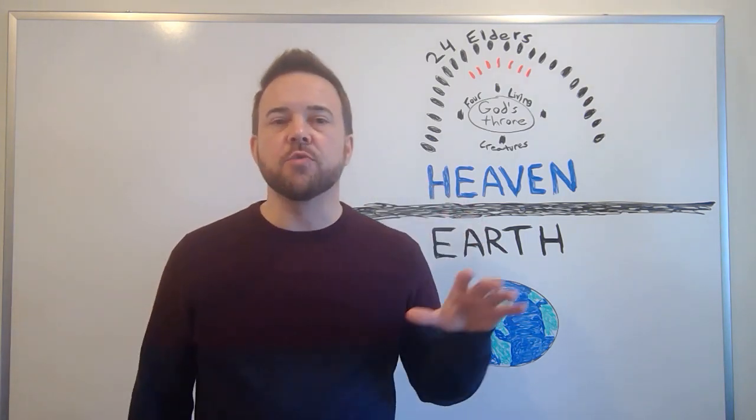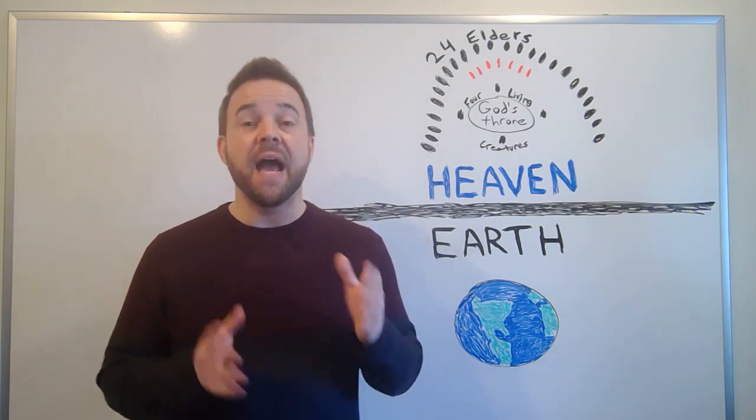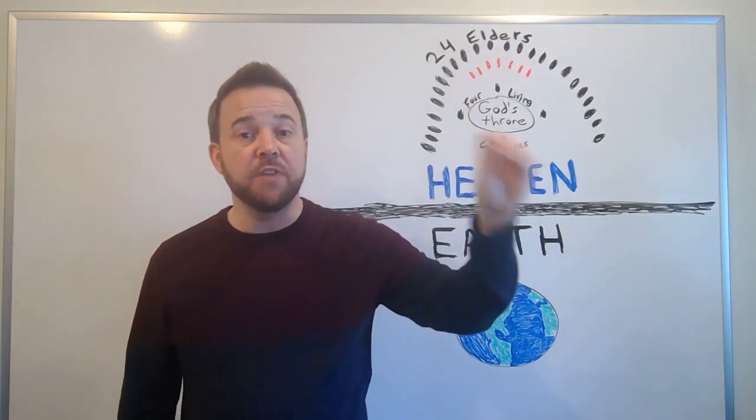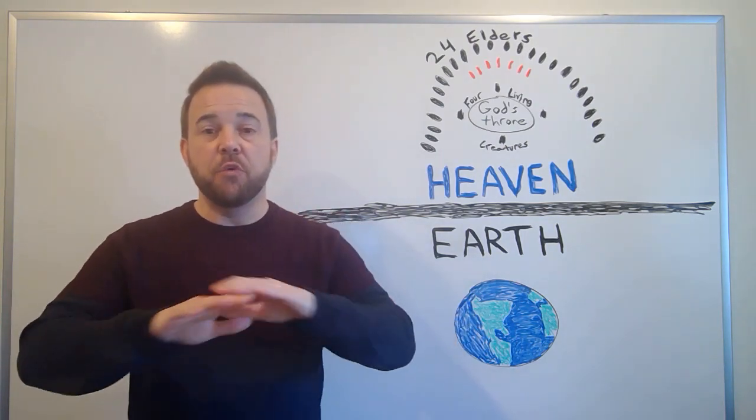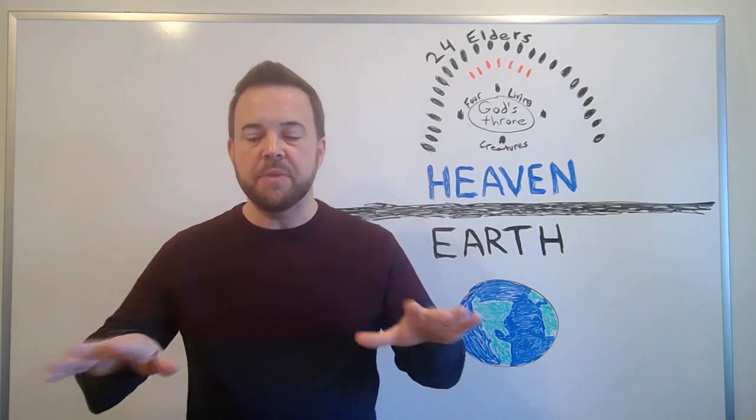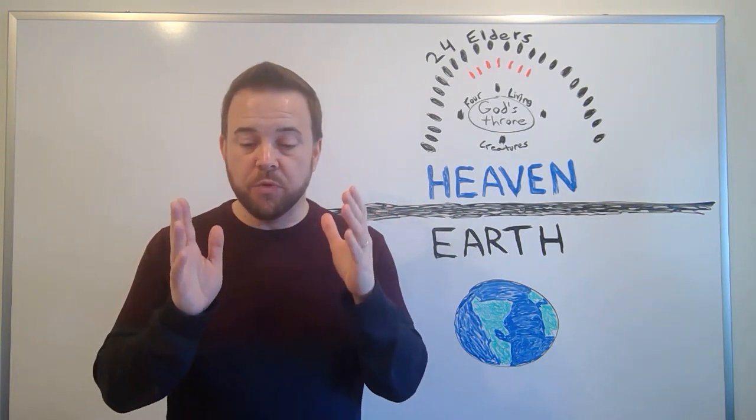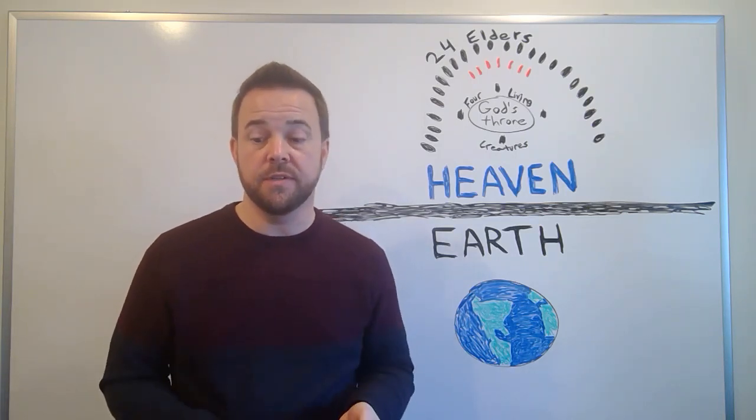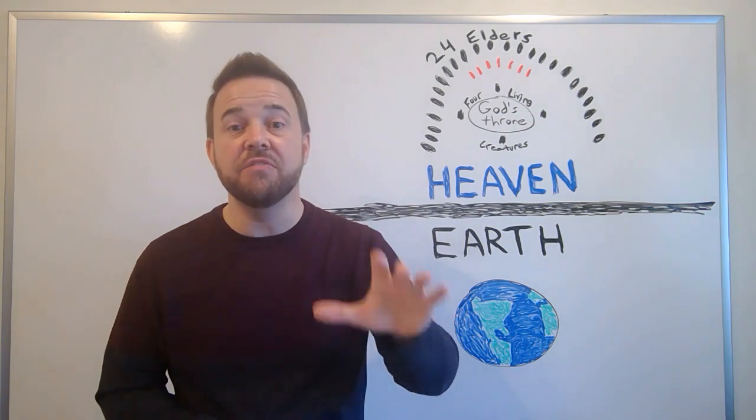John never describes what God looks like here, except to say that God looks like Jasper and Carnelian. God can only be described in terms of precious jewels. It's beyond human comparison or description. So around the throne of God is a rainbow. This is meant to be a reminder of God's covenant with humanity. It's a sign of promise and hope. After the flood with Noah in Genesis, God placed a rainbow in the sky as a sign of God's promise to never again destroy the earth through the waters of a flood.